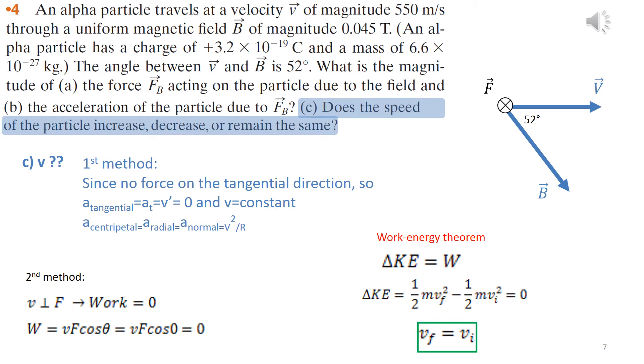In part C, they are asking if the speed is increasing, decreasing, or remain the same. Actually, you can think about this question in two ways. Either you use the sum of forces with accelerations, or you use energy and work. Let's start with the first method. Since no forces are acting on the tangential direction, so A tangential is zero and V prime is zero. So derivative is zero, it means that V is constant.